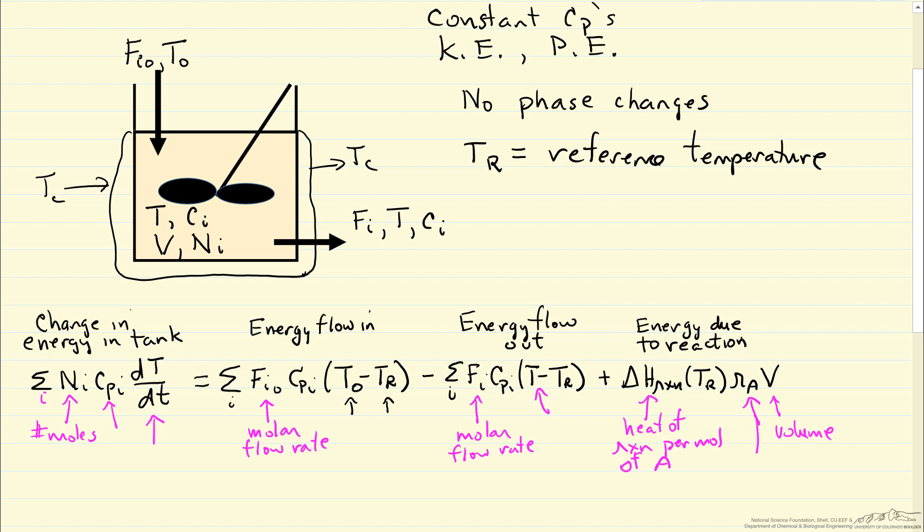We'll see this is something like minus the rate constant times concentration to the first power. So this is the heat of reaction at temperature TR, at that reference temperature, since heat of reaction in general can be dependent on temperature.